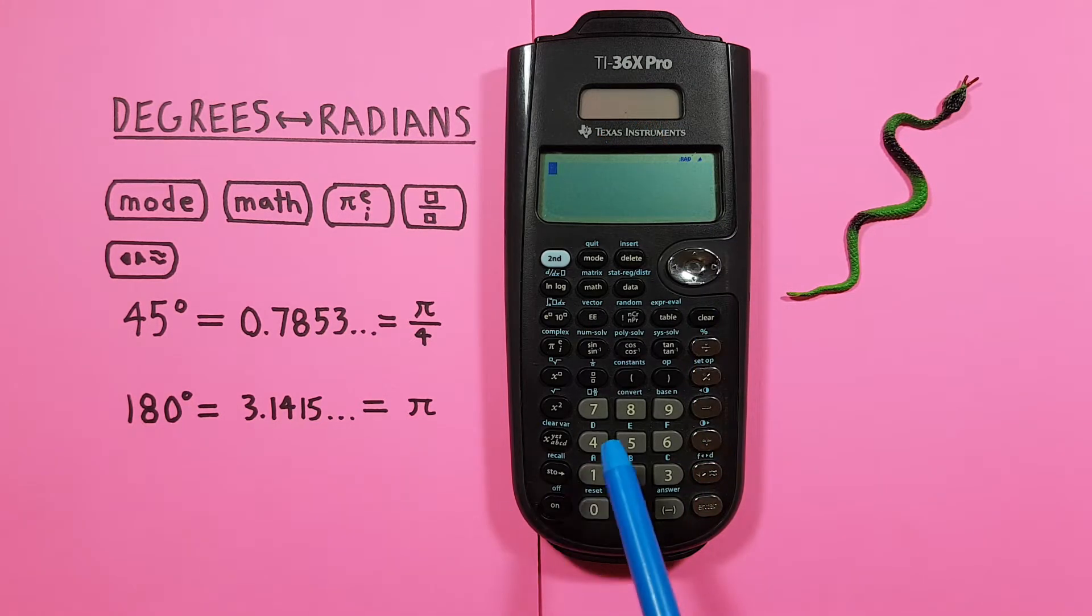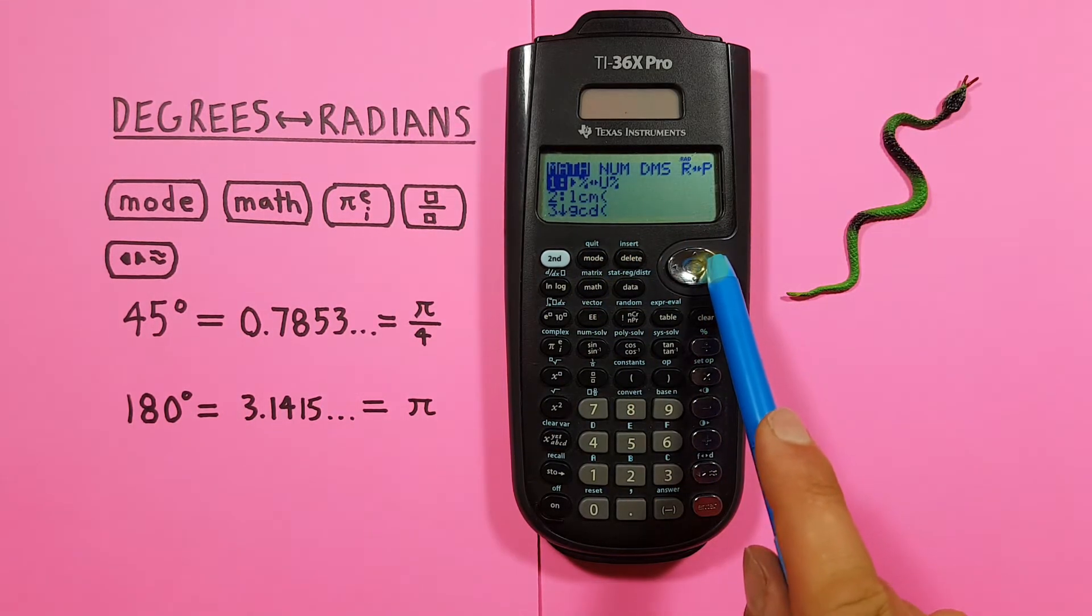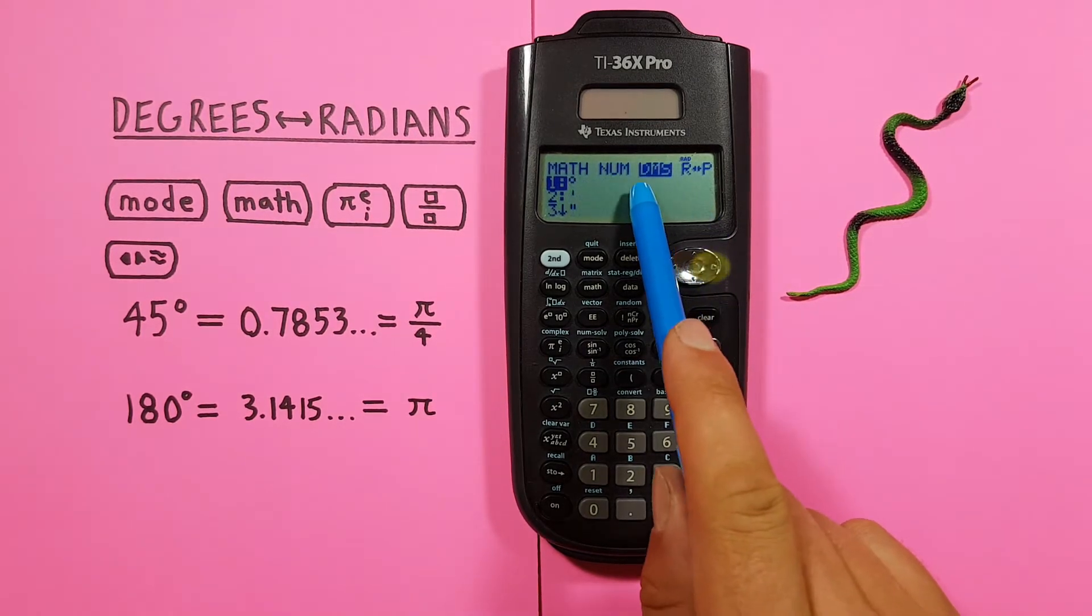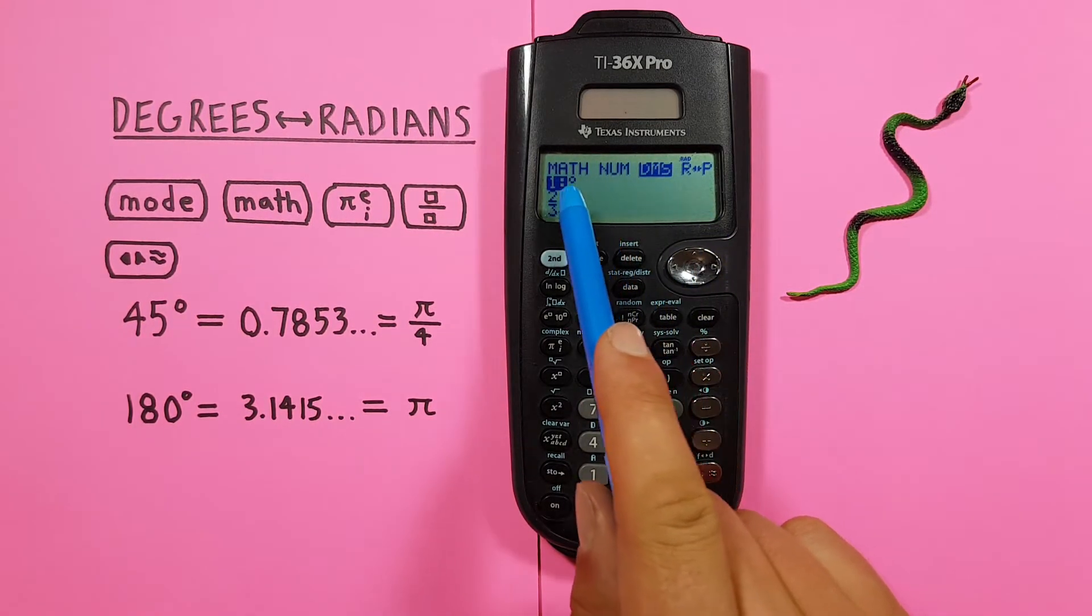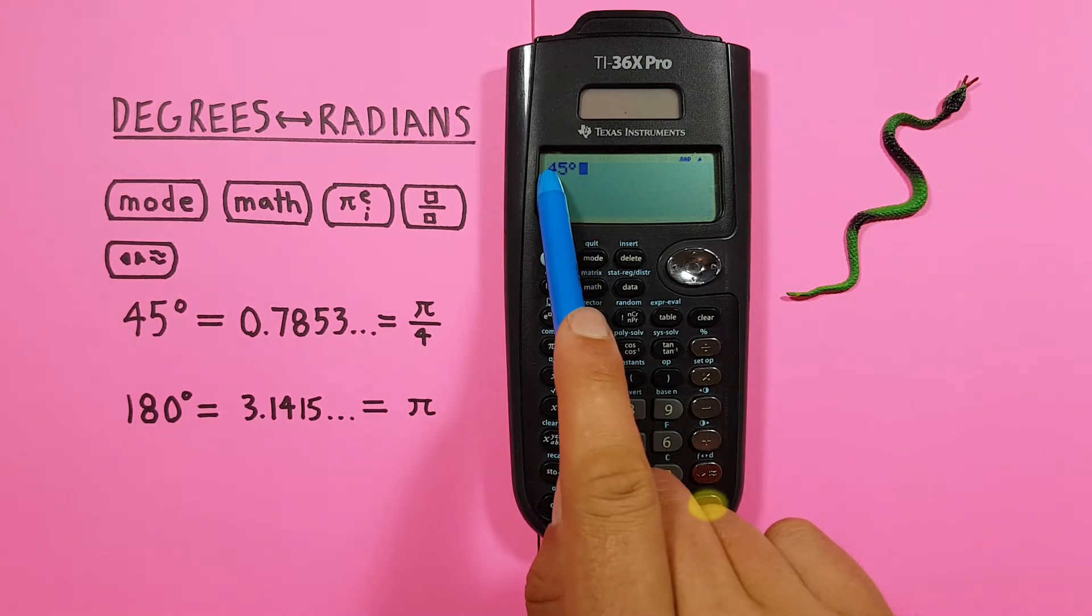Now we enter our 45 degrees. And then we need to tell our calculator these are degrees. To do that we press Math. And then scroll to the right twice till we get to DMS. We see our first option here is the degree symbol. So we press Enter. And now we have 45 degrees.